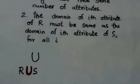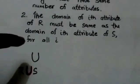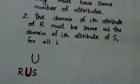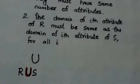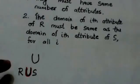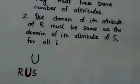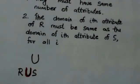Union operation is denoted by this symbol. Suppose there are two relations R and S. The result of R union S is a relation that includes all tuples that are either in relation R, in relation S, or in both relations R and S. Duplicate tuples are eliminated.